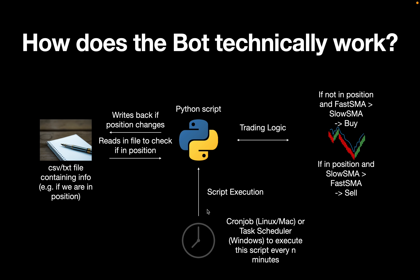The trading logic itself is straightforward. If we are not in a position and the fast SMA is above the slow SMA, we are buying. Contrary to that, if we are in a position and the slow SMA is above the fast SMA, we are selling. With that, we also write back to the CSV that we are no longer in a position.